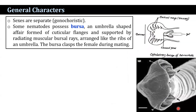In nematodes, the sexes are separate — that is, they are gonochoric. Some nematodes possess a bursa. This scanning electron microphotograph shows an umbrella-like structure formed of cuticular flanges and supported by radiating muscles called bursal rays, arranged like the ribs of an umbrella. The bursa clasps the female during mating.